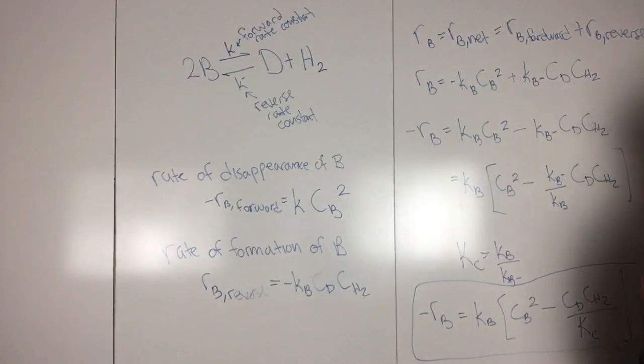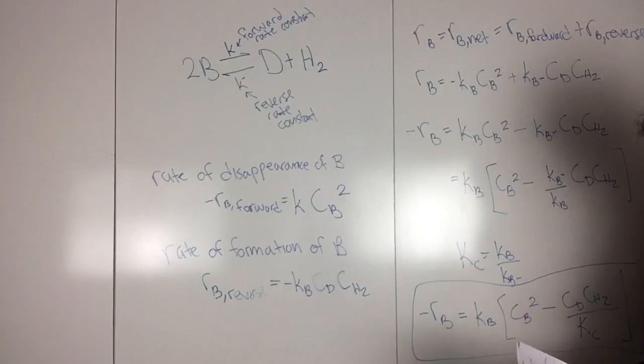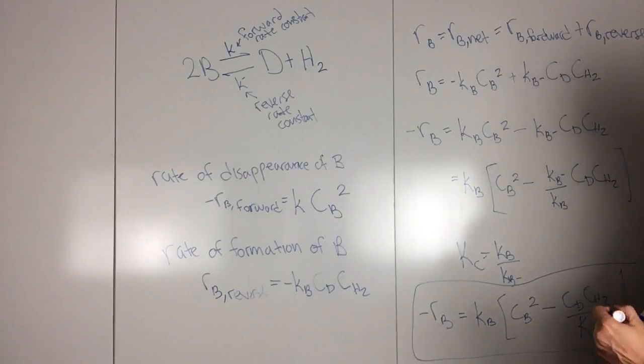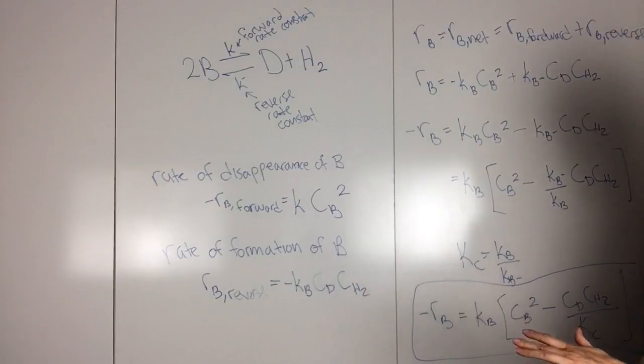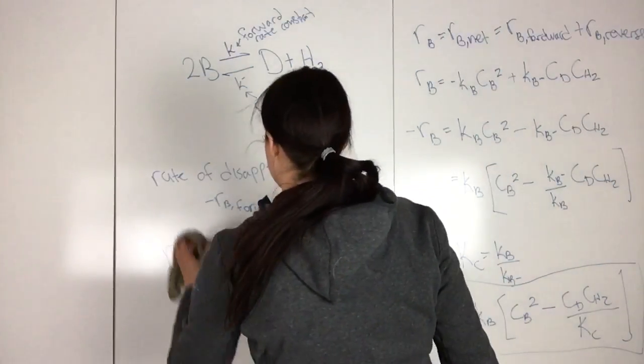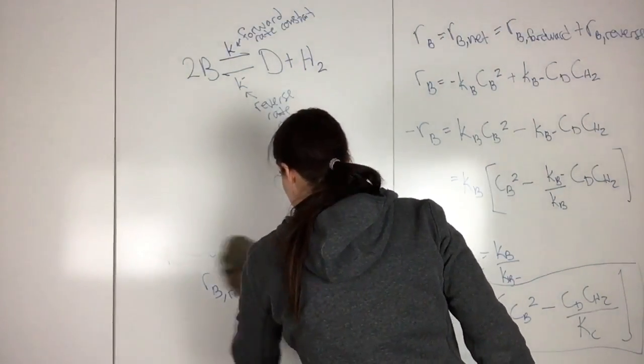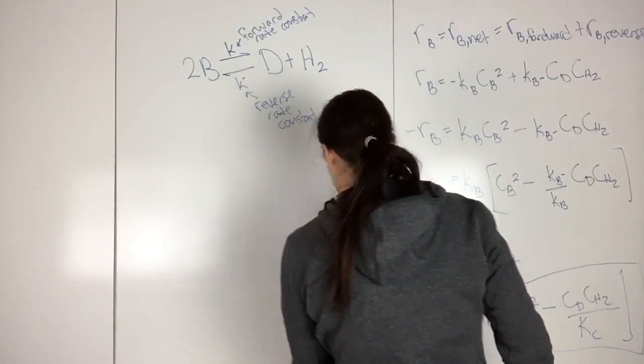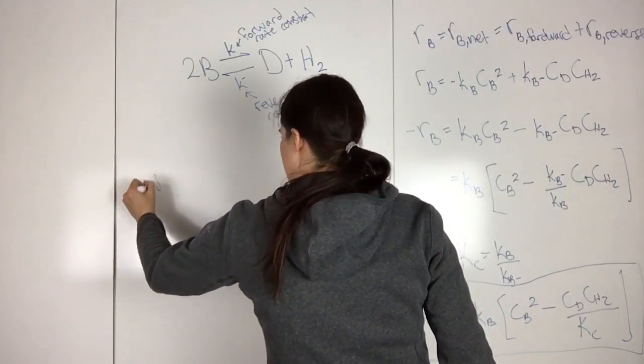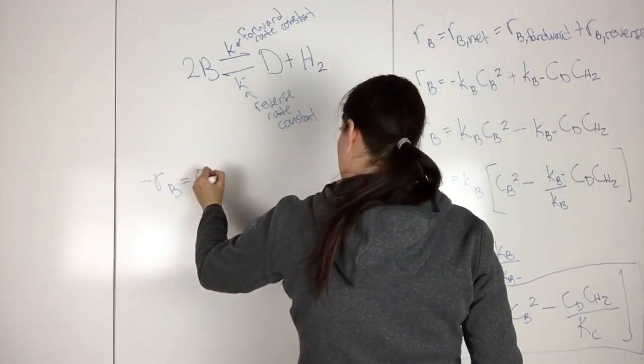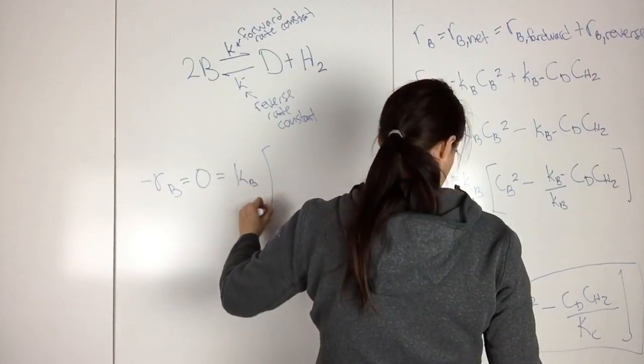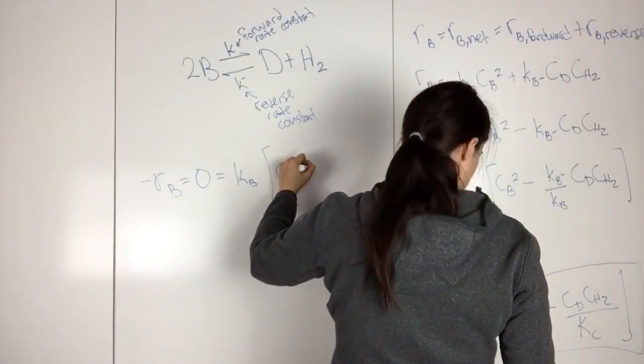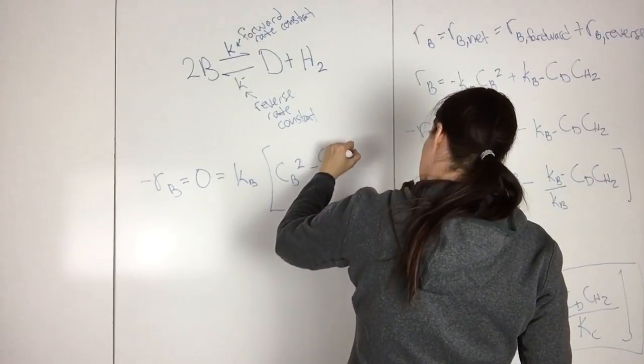So this is your rate law. Then if you want to find the equilibrium for this reaction, you know that when equilibrium is reached, then the rate has to be zero. So minus RB equals zero equals KB CB squared minus CD CH2 over KC.